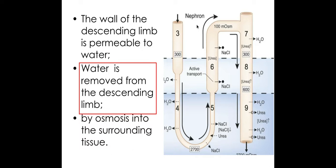As for the descending limb — numbers three and four — this side is permeable to water, meaning water can leave the descending limb. The ascending limb, by contrast, is impermeable to water. So ions are actively transported out of the ascending limb, but no water moves out of it. As a result of sodium and chloride ions leaving the ascending limb and lowering the water potential of the surrounding tissue, water moves out of the descending limb by osmosis, down its water potential gradient, entering the blood vessels surrounding the loop of Henle.